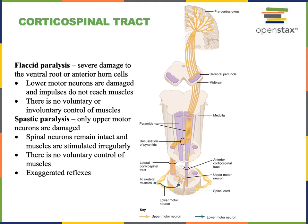The upper motor neuron, also known as a Betz cell, is found in layer five of the cerebral cortex in the precentral gyrus of the frontal lobe — the region of the frontal lobe known as the primary motor cortex.